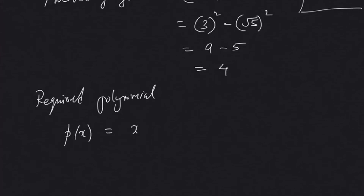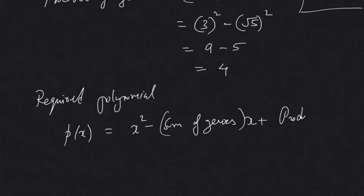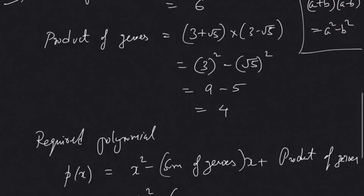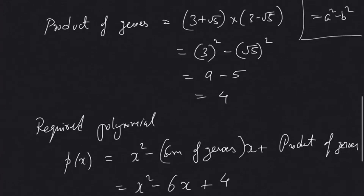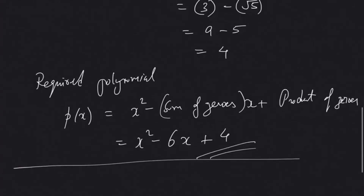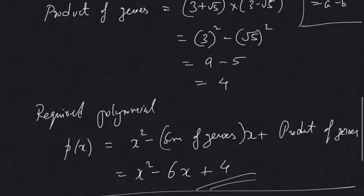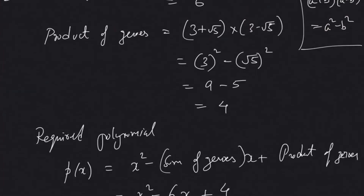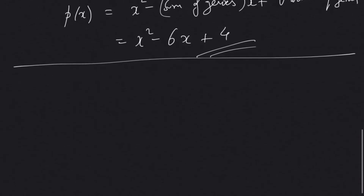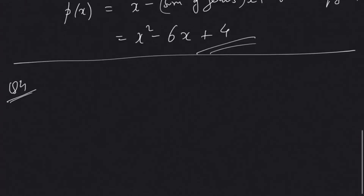The required quadratic polynomial is p(x) = x² − (sum of zeros)·x + (product of zeros), which gives us x² − 6x + 4. That's the solution to question three. It's quite simple — when zeros are given, find the sum and product of the zeros, then apply the formula: x² − (sum of zeros)·x + (product of zeros). Now let's move on to question number four.